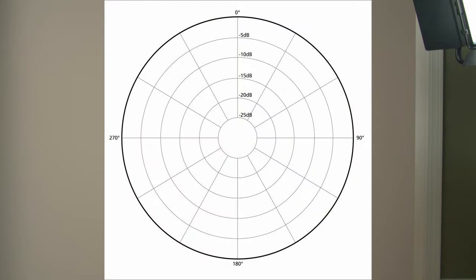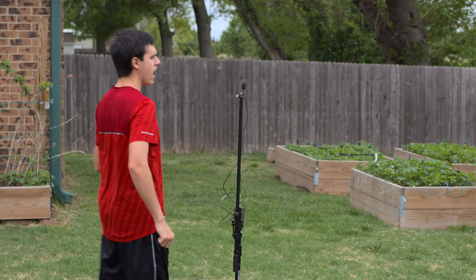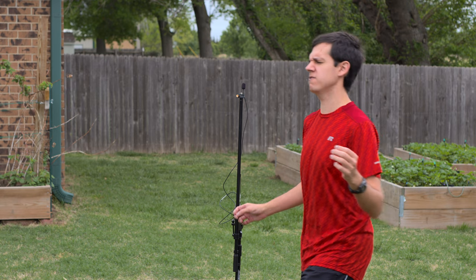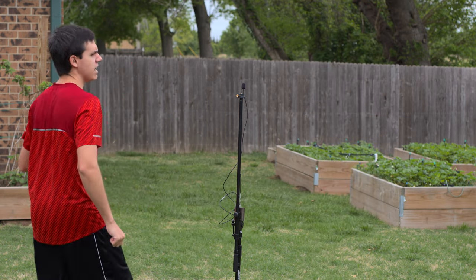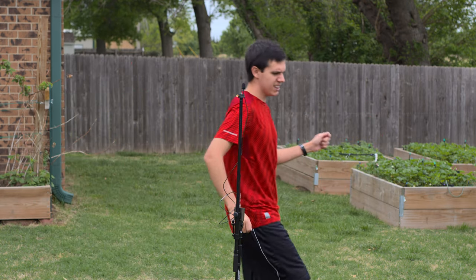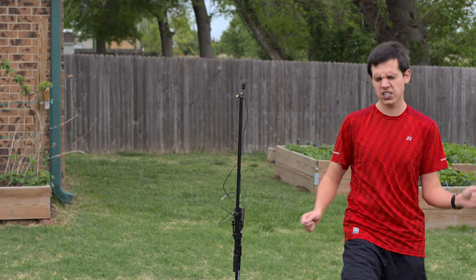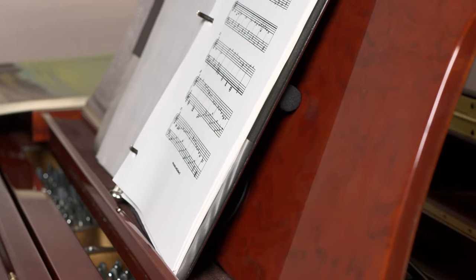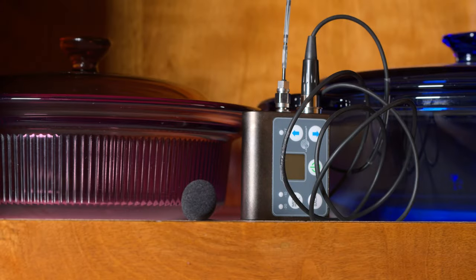Polar patterns can be broken up into two main categories: directional and omnidirectional. Omnidirectional mics have a polar pattern that looks a bit like this and pick up sound equally from all directions, like this lav mic. Listen how you can hear me equally well from all directions as I walk around this mic. Since lavs are so small and hidden in all sorts of weird places, they're almost always omnidirectional.